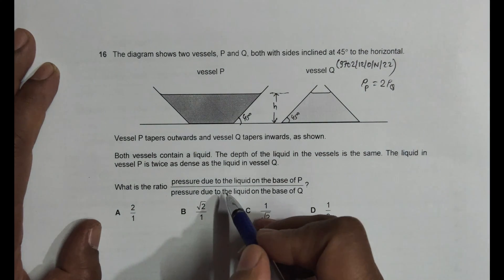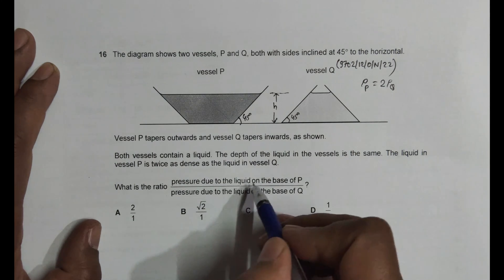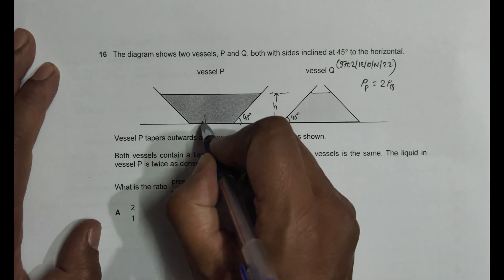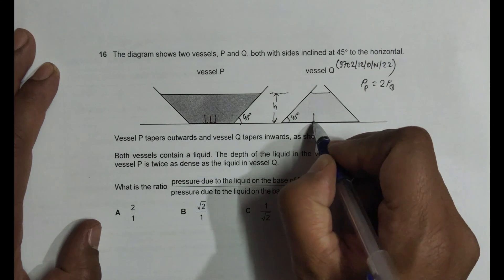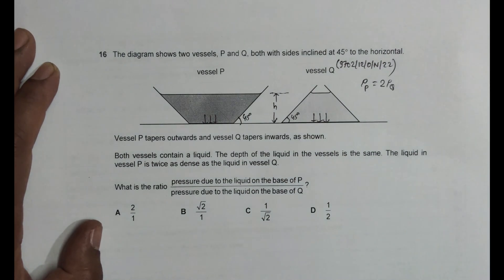What is the ratio of the pressure due to liquid on the base of P? So pressure here, pressure here and pressure here. So we have to find the ratio of these two pressures.